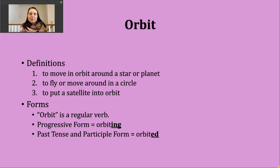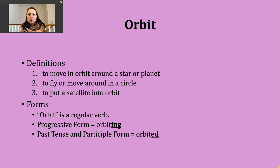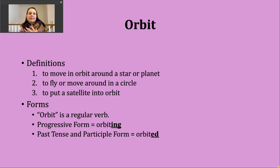I've picked this particular verb, as well as some others connected to space travel, because it's something we've been discussing in one of my ESL classes and looking at new vocabulary related to it. With this first definition, you might think of astronauts moving around stars, planets, etc. A second way you might hear orbit used is just to mean to fly or move around in a circle.